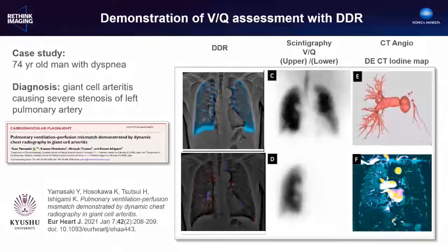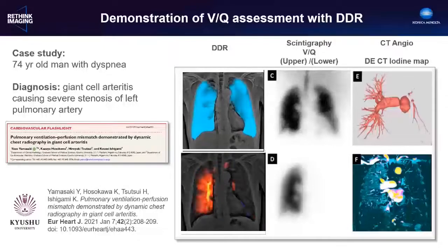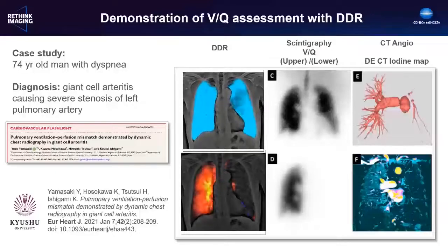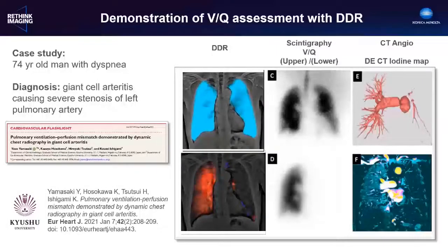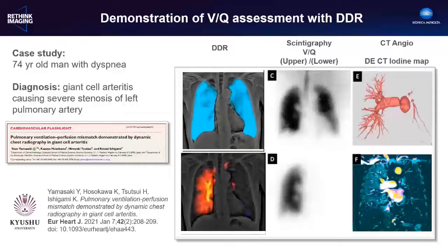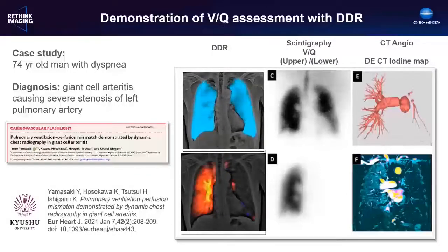The utility of both these analytics is demonstrated in a case study by Dr. Yamasaki and colleagues at Kyushu University. A 74-year-old man presented with dyspnea. These novel images detected normal ventilation dynamics in bilateral lungs, but severely decreased perfusion in the left lung. Lung ventilation-perfusion scintigraphy showed the ventilation-perfusion mismatch of the left lung, very similar to the DDR findings. CT pulmonary angiography and iodine mapping with dual energy CT also showed a similar finding to the pulmonary perfusion image of DDR. The patient was ultimately diagnosed with giant cell arteritis and pharmacological therapy was started.